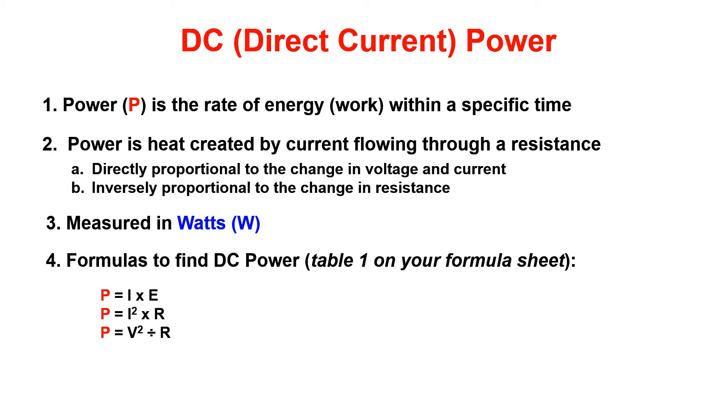The formulas to find power are located in table one on your formula sheet. Utilize the two values given in a problem and solve for the missing value. If current and voltage are given, use the current times voltage formula. If current and resistance are given, use the current squared multiplied times the resistance. Now that you can calculate power for a given circuit, let's move on to voltage and current dividers.